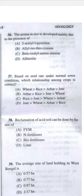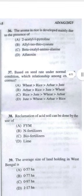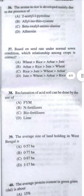Question 37: Based on seed rate under normal sown condition, which relationship between crops is correct? Answer A — wheat seed rate is higher at 120 kg per hectare, rice 100 kg per hectare, then linseed/mustard 12–15 kg per hectare, and jute 6–8 kg per hectare. So obviously choose option A.